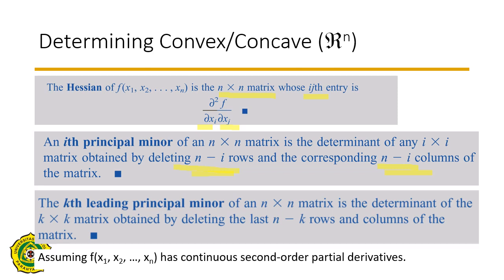We also have the kth leading principal minor, which is the determinant of the k by k matrix obtained by deleting the last n minus k rows and columns. The keyword here is 'last' — unlike principal minors where any rows can be deleted, leading principal minors specifically require deleting the last rows and columns. We will apply this definition to an example to make everything clear.